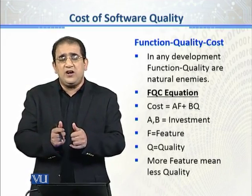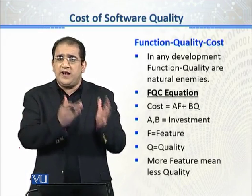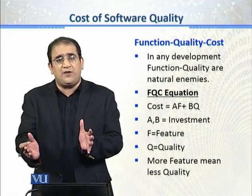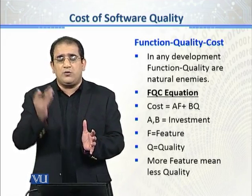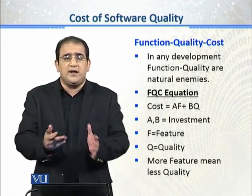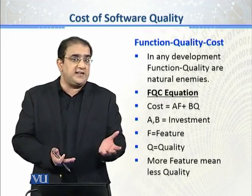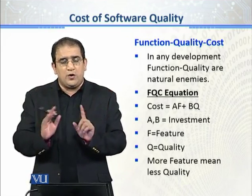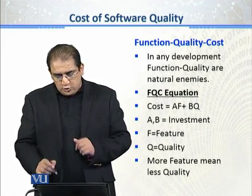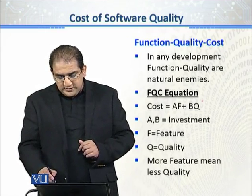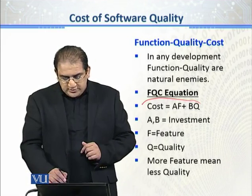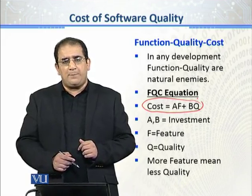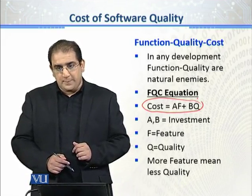Quality और functionality opposite poles हैं — एक چیز بننی ہے، دوسرا department fault-prove کرتا ہے کہ آیا یہ user کی requirements کے مطابق تھی یا نہیں۔ یہ ایک دوسرے کے opposites ہیں۔ Now just look at the equation of FQC — the cost is AF + BQ.